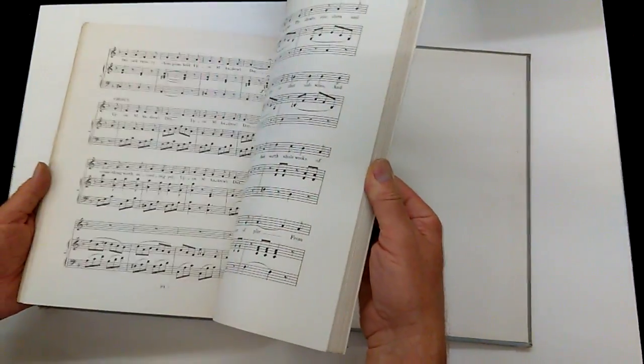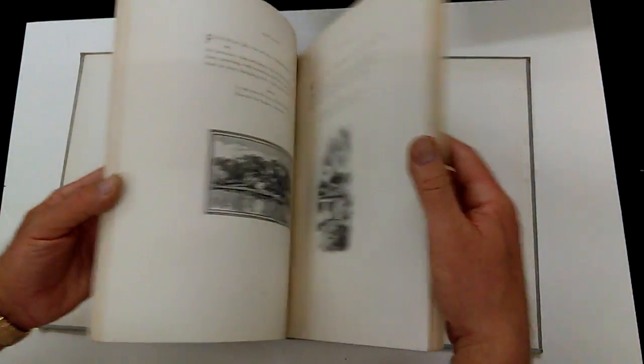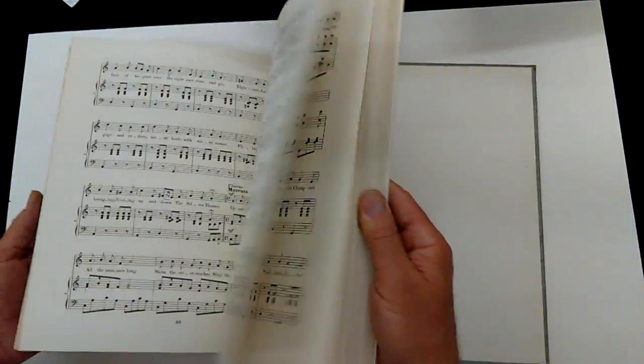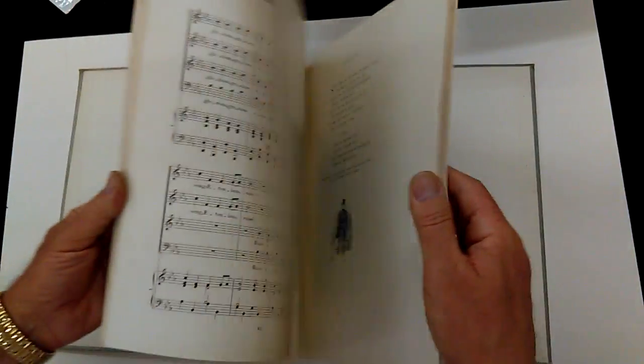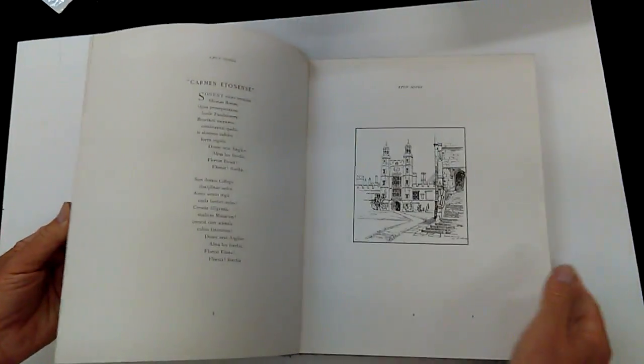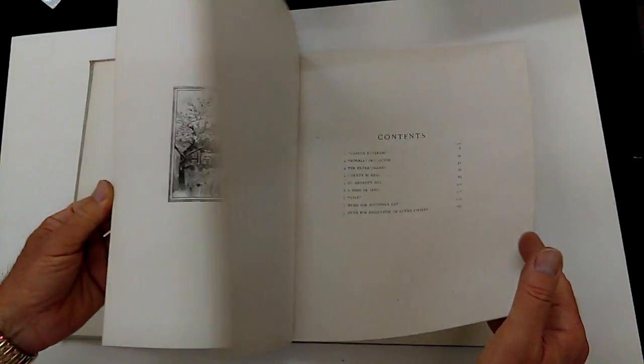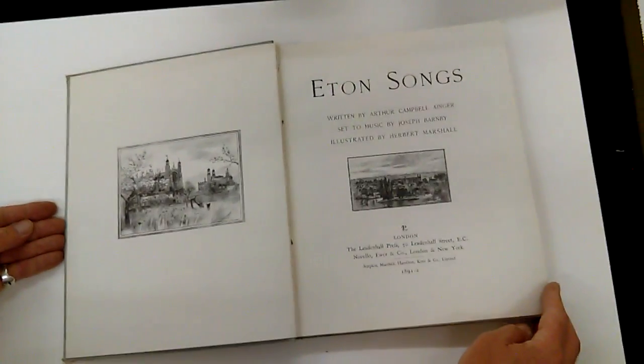Currently on the internet I can find copies of this priced at £175, and in a rather fine binding, £600. Our starting price, as you see, is rather less than that. 1891 Eton songs. Thanks very much, bye.